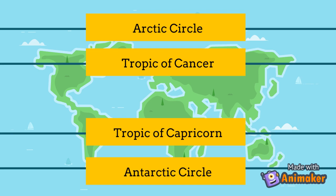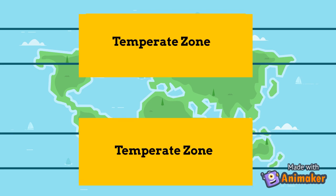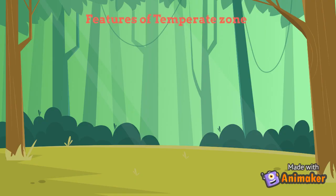The area between the lines of tropics and the lines of circles is called the temperate zone. Features of the temperate zone: it has mild temperatures.